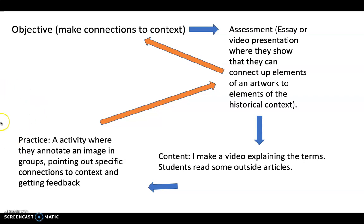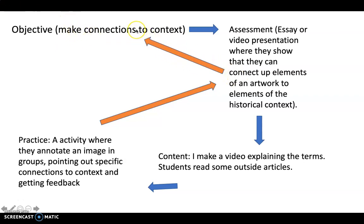Then I'll go in and give feedback — if they're totally missing the mark, I'm going to tell them at that point. Once they've done the practice, they'll do the assessment I already decided on. Following the orange arrow: now that they've practiced, they will do their essay or video presentation and show that they can connect elements of an artwork to elements of historical context. Following the orange arrow from that, it points right back to my original objective. So that's the backwards element — you start with the objective, and that's also kind of where the students end. I start with the objective in my design, and ultimately students work their way through the class and at the end they realize they can meet that objective.